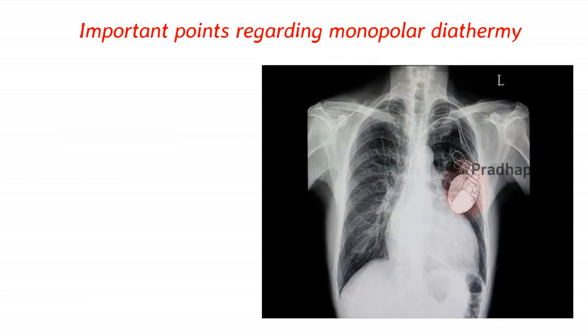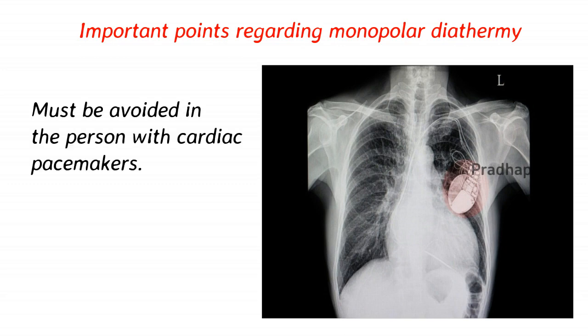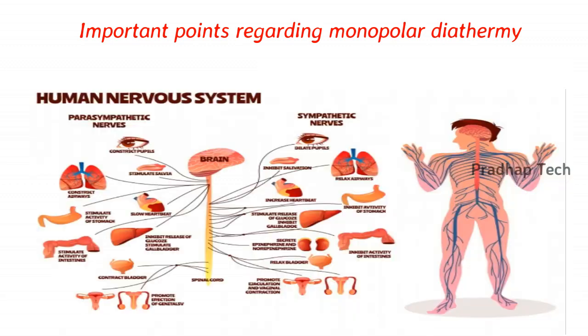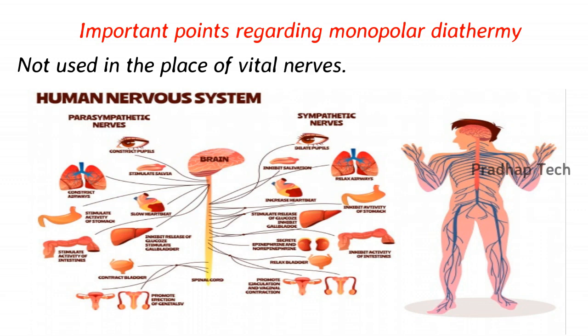Monopolar diathermy also interferes with cardiac conduction and must be avoided in persons with cardiac pacemakers. Due to the high conduction of current, it causes thermal damage to nerves and surrounding structures, so it is not used near vital nerves.